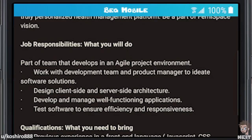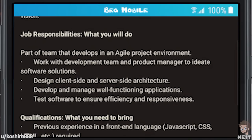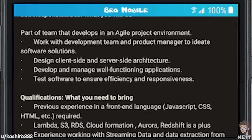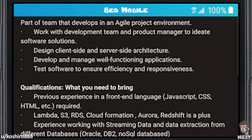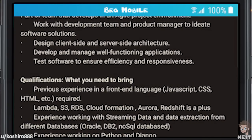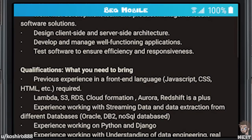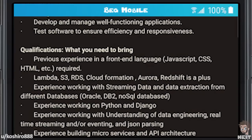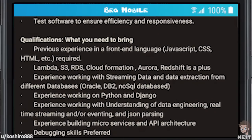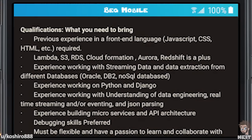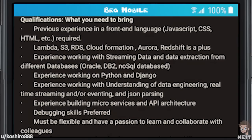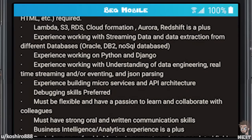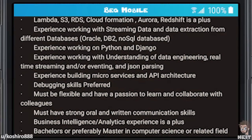Qualifications — what you need to bring: previous experience in a front-end language (JavaScript, CSS, HTML, etc.) required. Lambda, S3, RDS, CloudFormation, Aurora, Redshift is a plus. Experience working with streaming data and data extraction from different databases — Oracle, DB2, NoSQL. Experience working on Python and Django. Experience with understanding of data engineering, real-time streaming and/or eventing and JSON parsing. Experience building microservices and API architecture. Debugging skills preferred. Must be flexible and have a passion to learn. Must have strong oral and written communication skills. Business intelligence analytics experience is a plus.